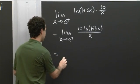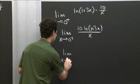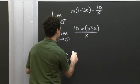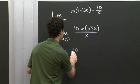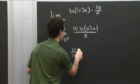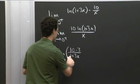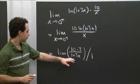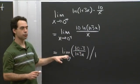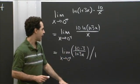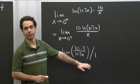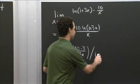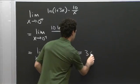By L'Hôpital's rule, this equals the limit as x goes to 0 from the right of the derivative of the numerator over the derivative of the denominator. The derivative of 10 ln(1 plus 3x) is 10 over (1 plus 3x) times 3 by the chain rule, and the derivative of the denominator x is just 1. This is true provided this second limit exists. The second limit is no longer indeterminate — plugging in x equals 0, we get that this equals 30.